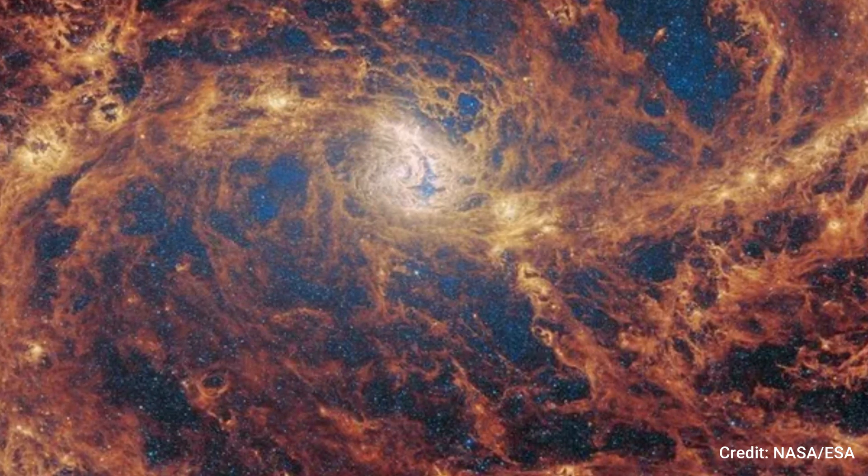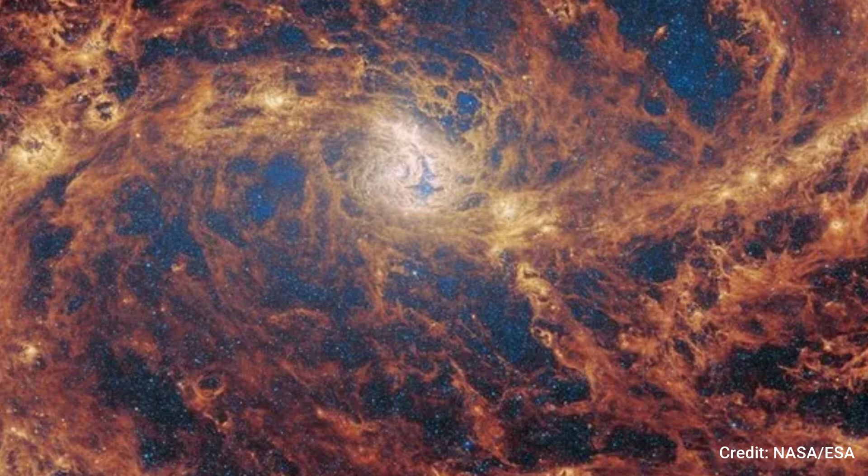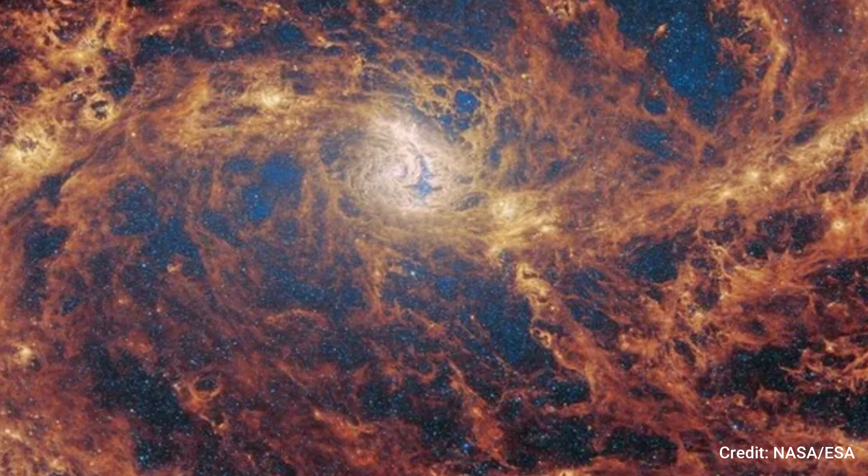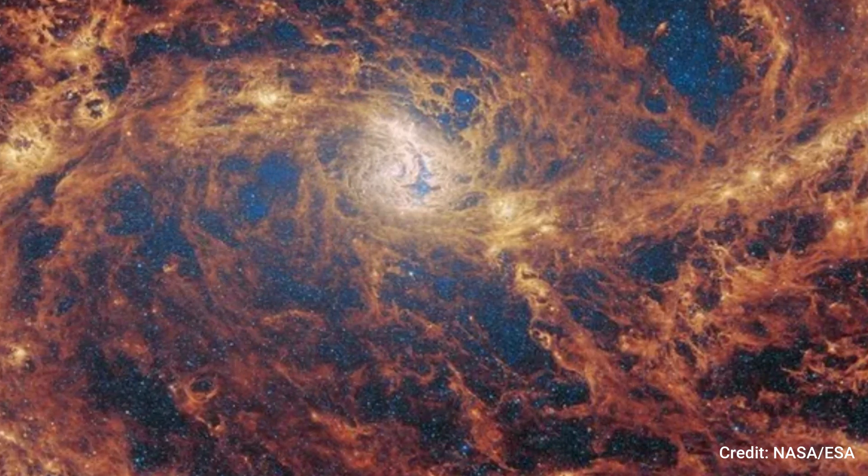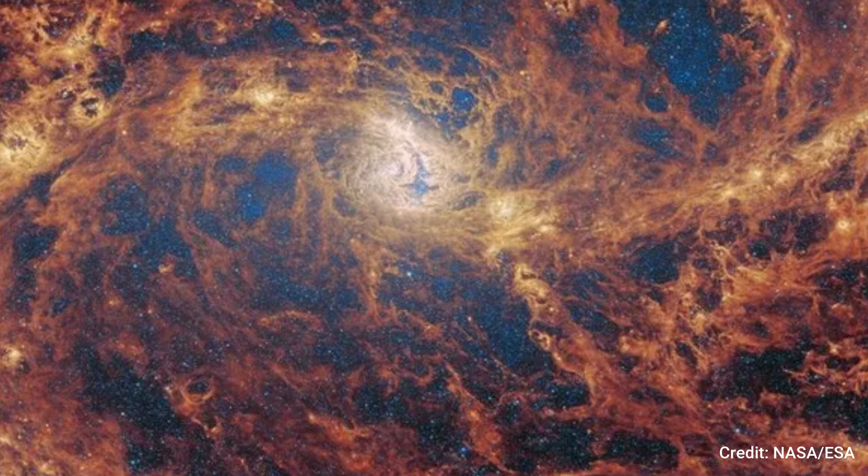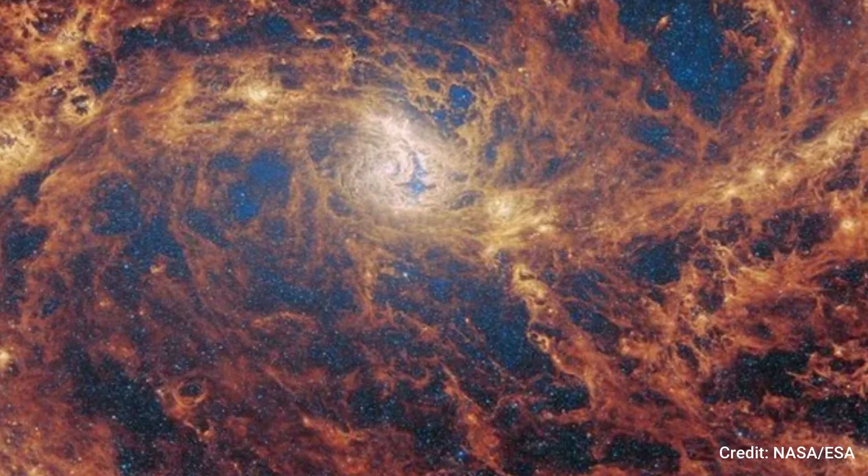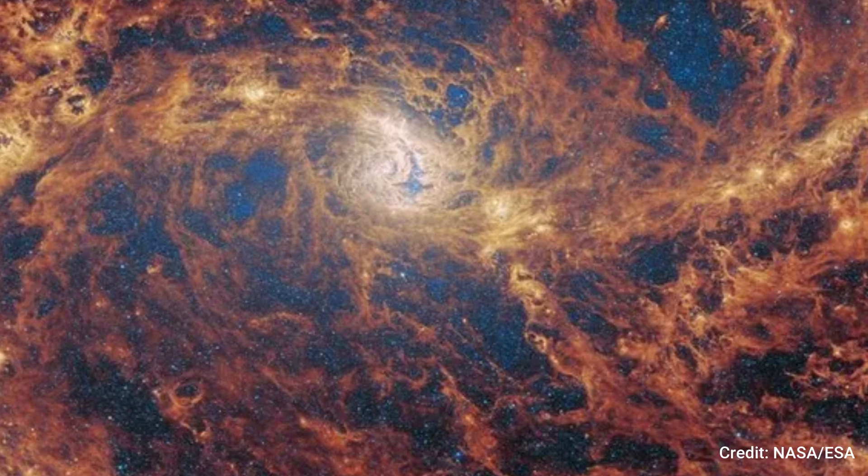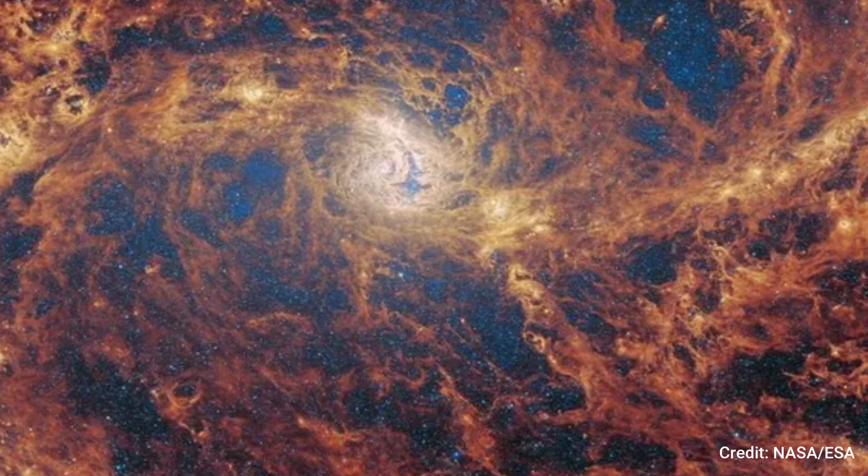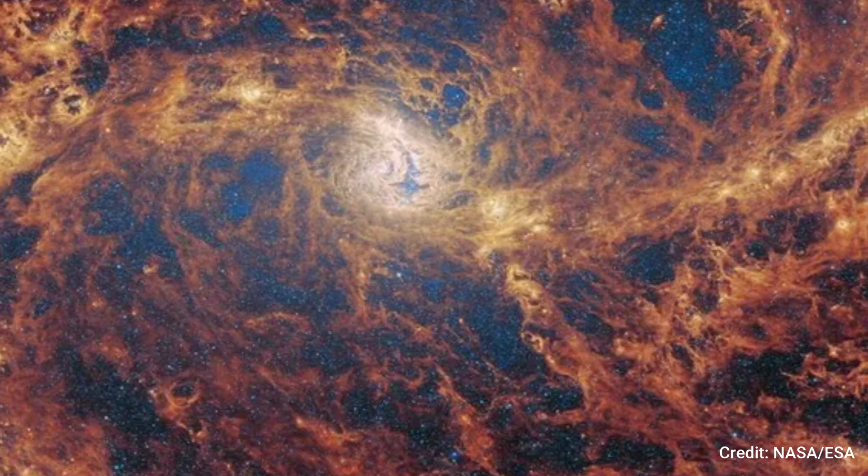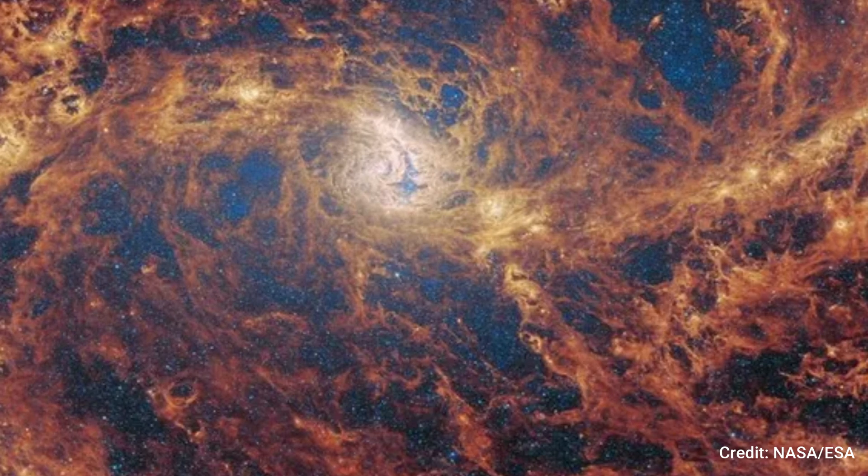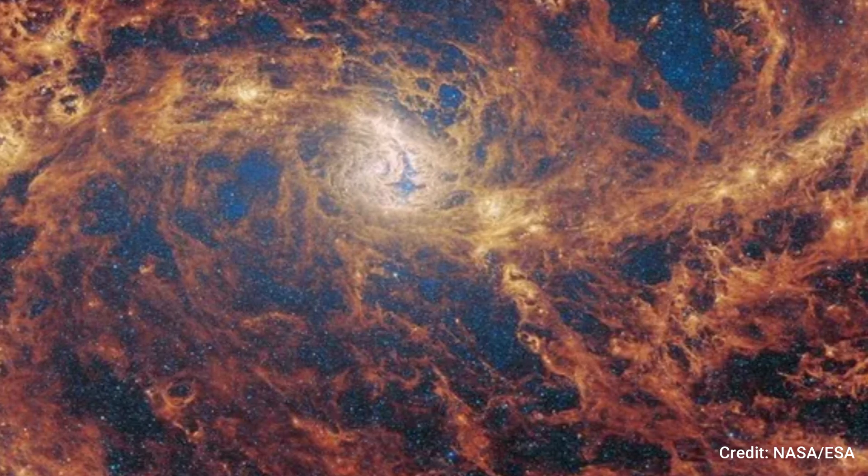Specifically, this celestial masterpiece was revealed through the lens of one of its potent infrared instruments, the mid-infrared instrument. Also identified as NGC 5236, M83 stands as a barred spiral galaxy positioned approximately 15 million light-years away from our vantage point.